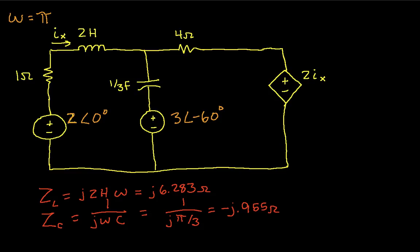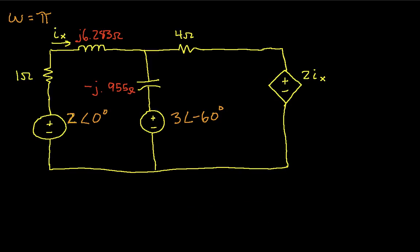So let's replace our values with their impedances. So we have ZL is J 6.283 ohms. And ZC is minus J 0.955 ohms. And we'll make these guys go away.